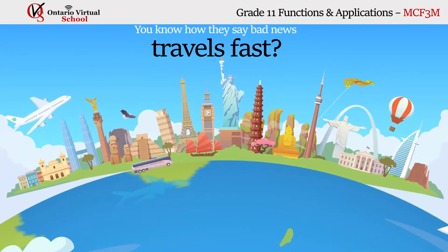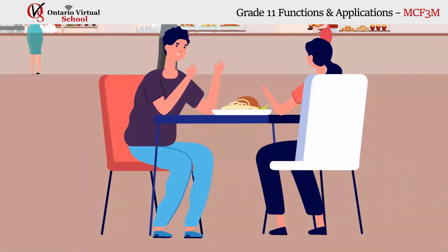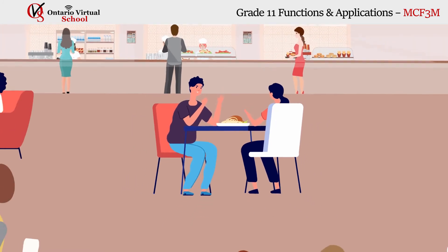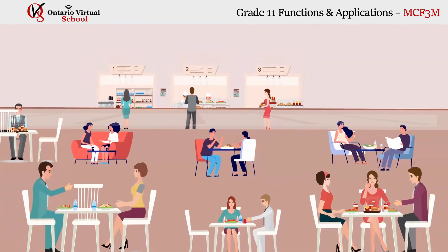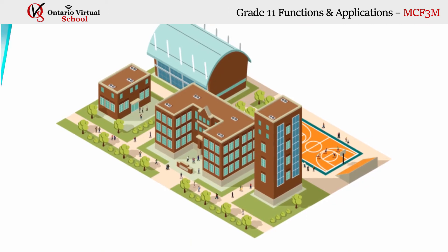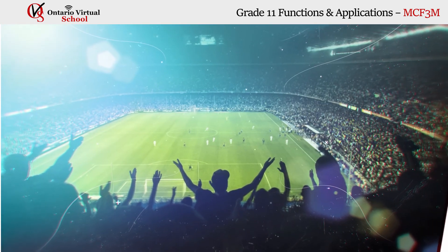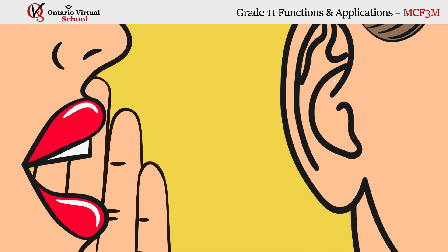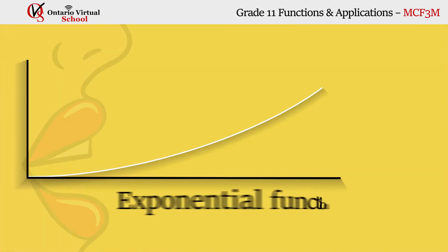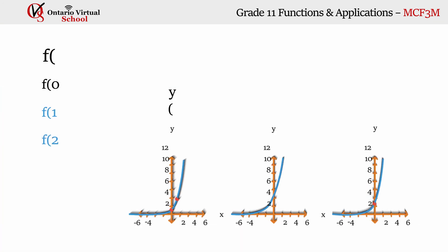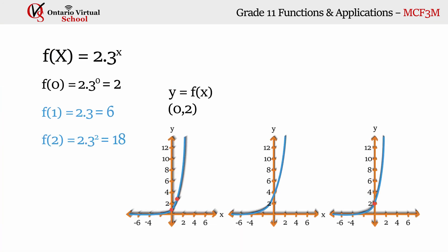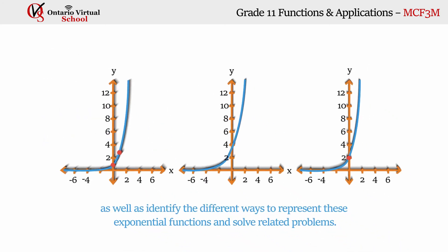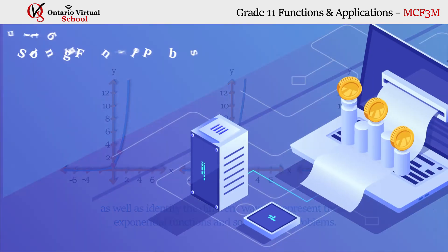Unit 5: Exponential Functions. You know how they say bad news travels fast? One person tells their friend a secret, then that friend tells some other friends at lunch, and so on, until the whole school knows that Sally dumped Joe at the football game. The way gossip spreads is just one example of how many everyday phenomena can be modeled using exponential functions. In this unit you will learn how to simplify and evaluate expressions involving exponents, identify different ways to represent exponential functions, and solve related problems.